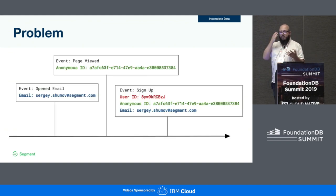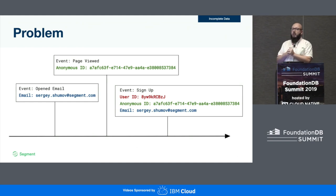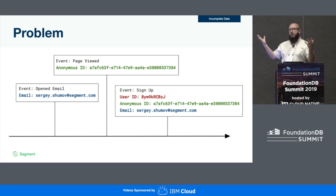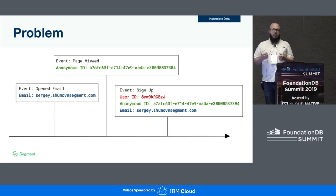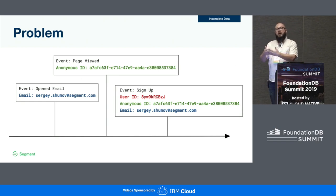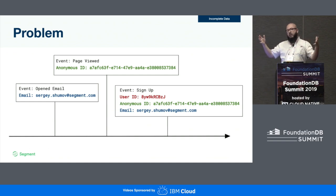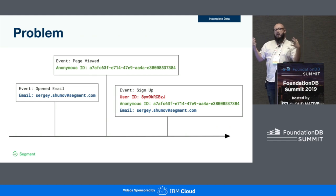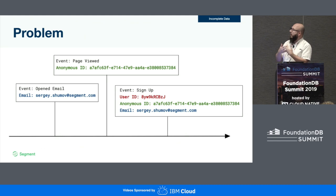A common problem you might see is a user goes to a website or opens an email and is redirected to a website, and all we know about them is some random ID we've generated and given in their cookie — an anonymous ID. They might have opened an email, and through the data we collect over time we're able to build a unified ID. They may log in and complete a transaction, and all of those events have different identifiers associated with them.